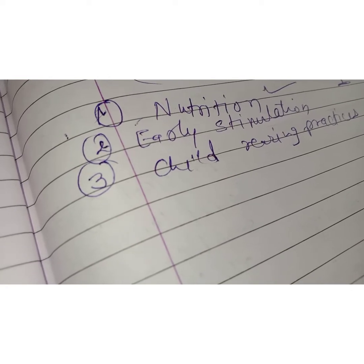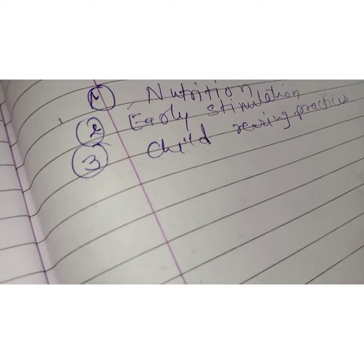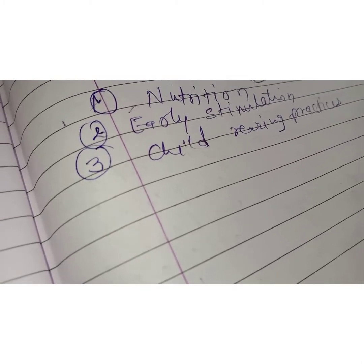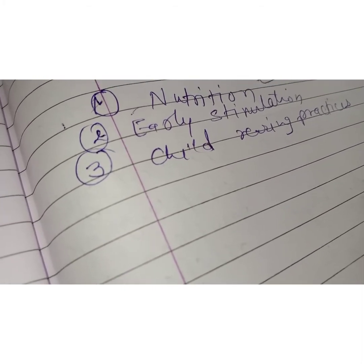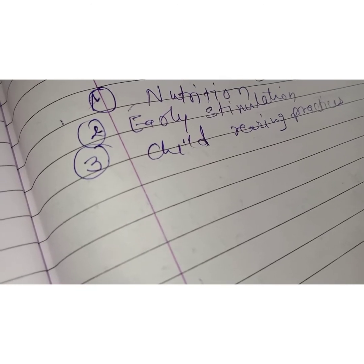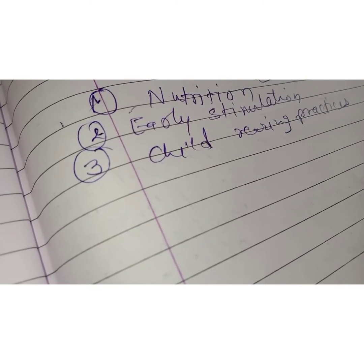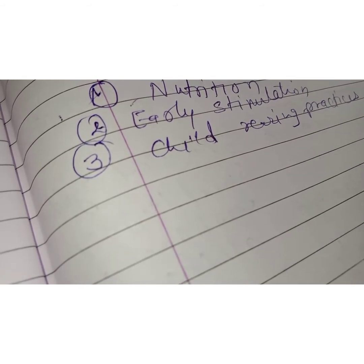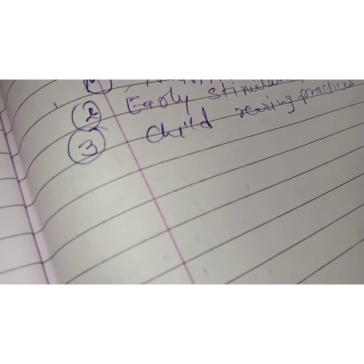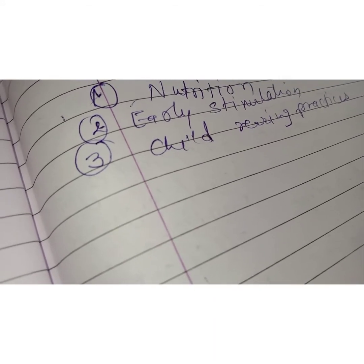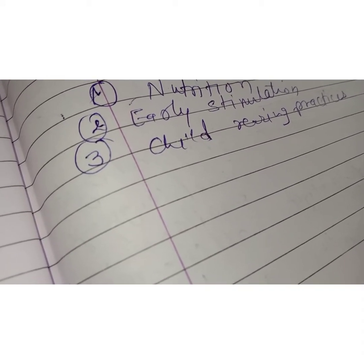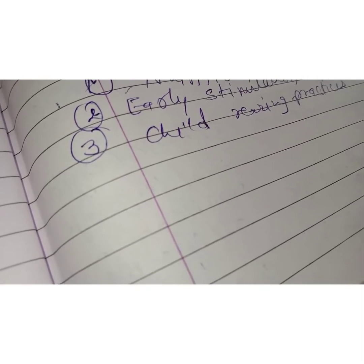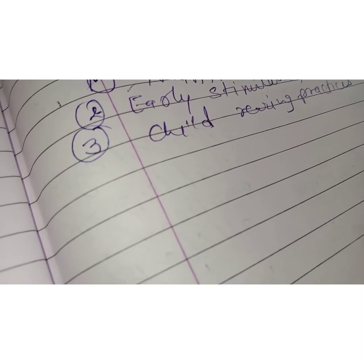In child rearing practices, parents are different and follow different kinds of practices. What kind of child rearing is provided at different ages, and the influence of other family members, all determine whether children develop well or not.